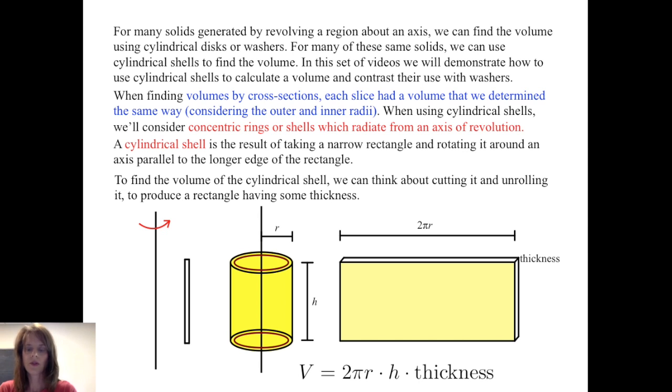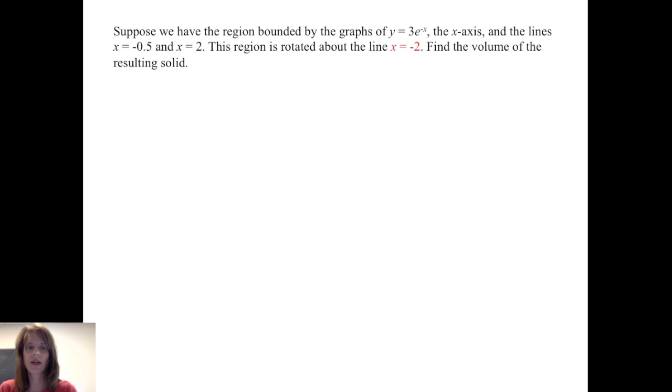So let's apply this to an actual problem. Suppose we have the region bounded by the graphs of y equals 3 times e to the negative x, the x-axis, and the lines x equals negative one-half and x equals 2. This region is rotated about the line x equals negative 2. We want to find the volume of the resulting solid.